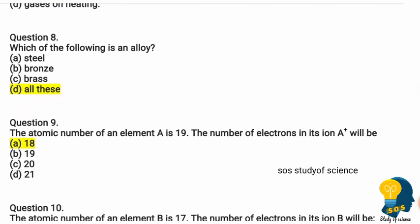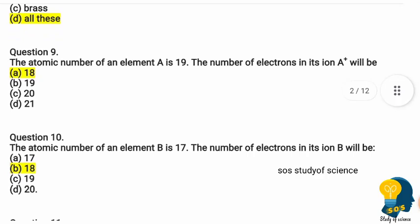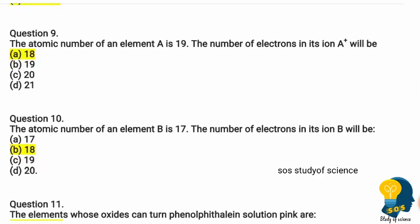Question eight: which of the following is an alloy? Option A steel, option B bronze, option C brass, option D all of these. The correct answer is option D — all of the above. Steel, bronze, and brass are all alloys.